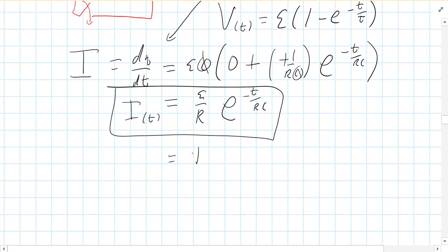Now, again, sometimes we'll call this current in the front. We'll call the coefficient i max, and then you have e, and then this is negative t, and then, of course, rc is, we call that tau. So you can write current as a function of time this way as well.